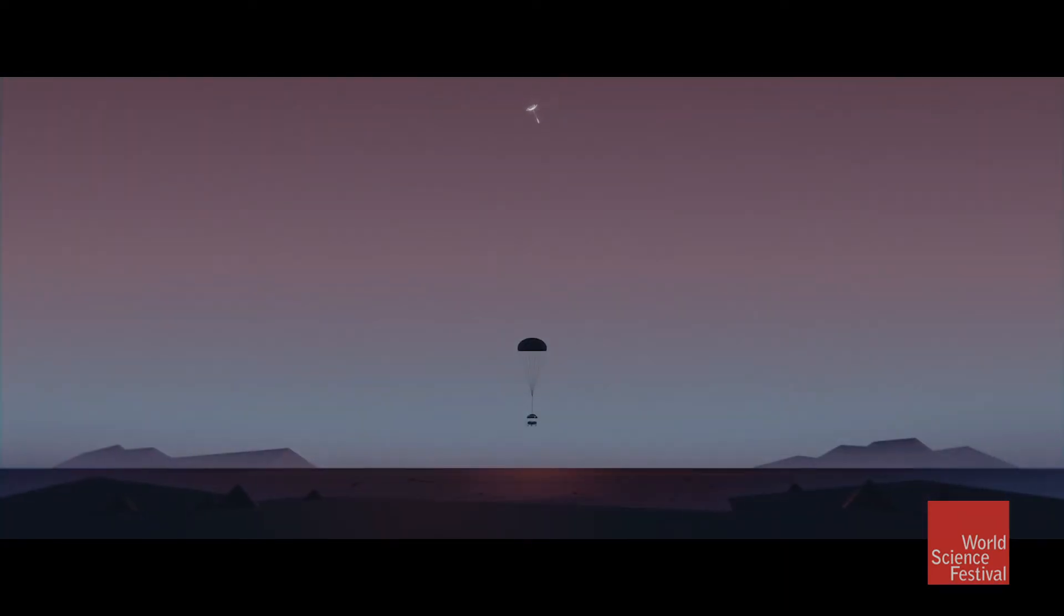Viking 1 touched down on July 20th, 1975, and sent back the first images from the Martian surface.